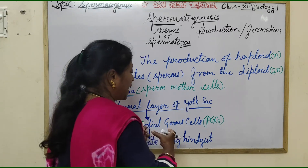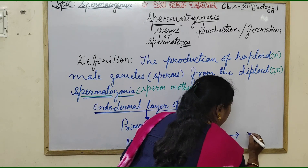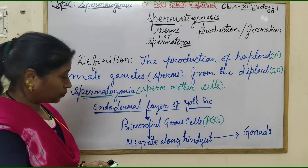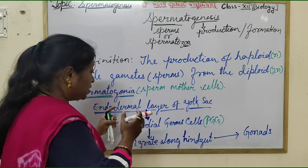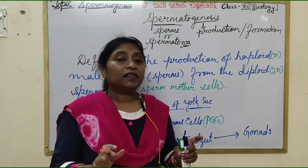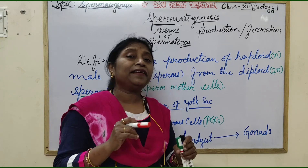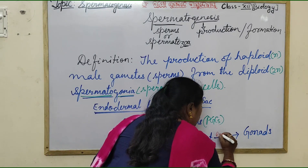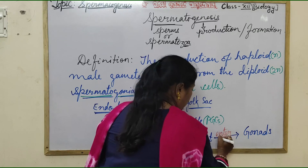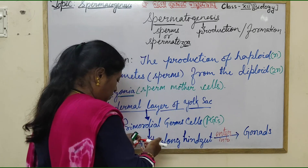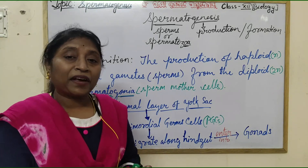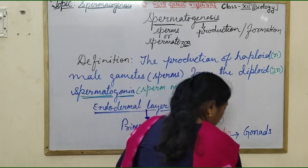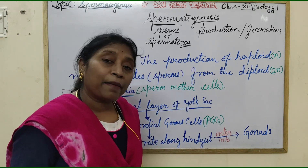After migrating along the hindgut, the PGCs enter into the gonads. It is important to note that these primordial germ cells are not specific when they migrate, but after entering into the gonad they become specific gametogonia.